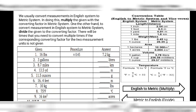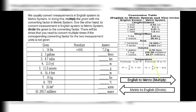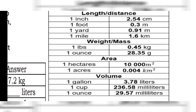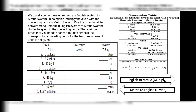Let us have our first example: convert 16 pounds to kilograms. Pounds is English going to metric, so we multiply. The converting factor is 0.45, so 16 times 0.45 gives us 7.2 kilograms. For number two: convert 3 gallons to liters. Gallons to liters is English to metric so we multiply. The converting factor is 3.78, therefore 3 times 3.78 equals 11.34 liters.